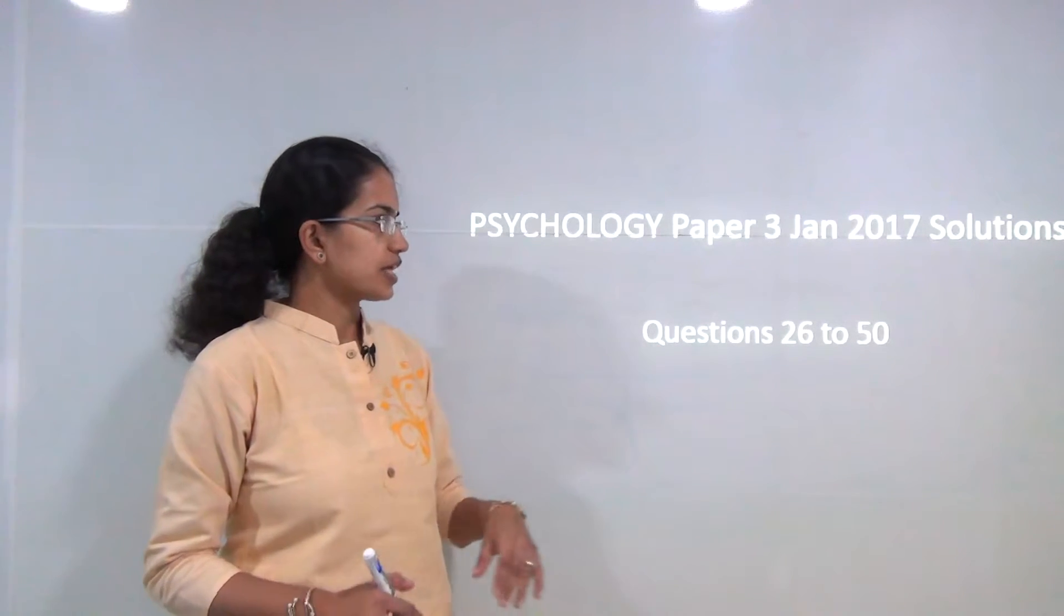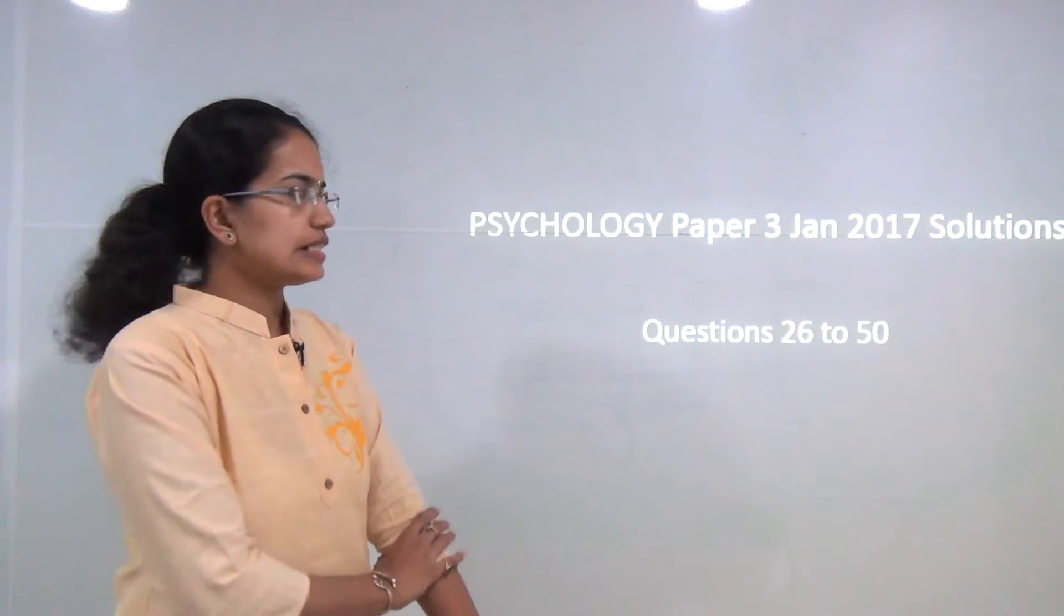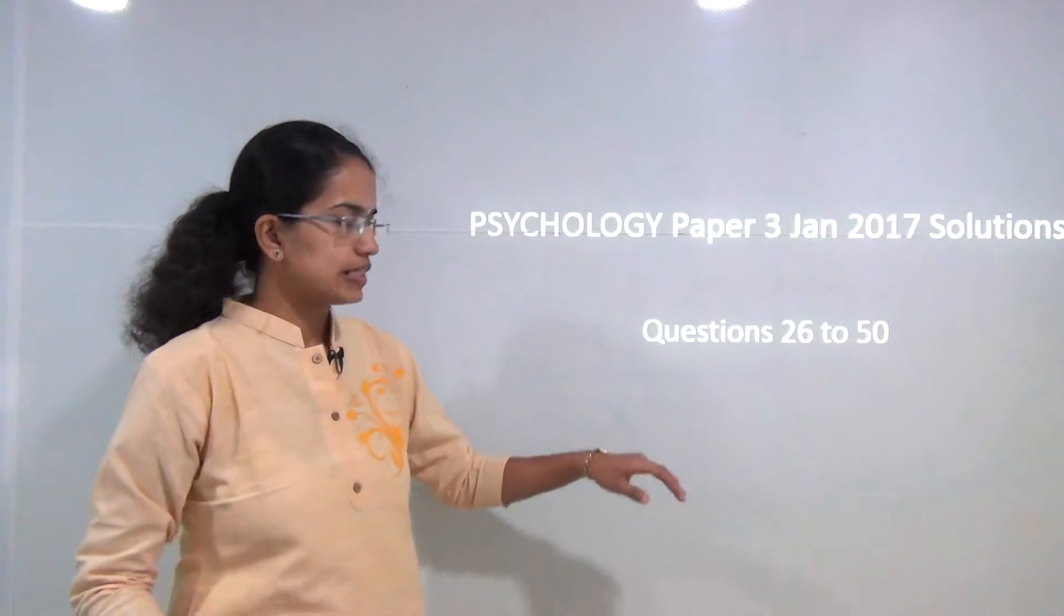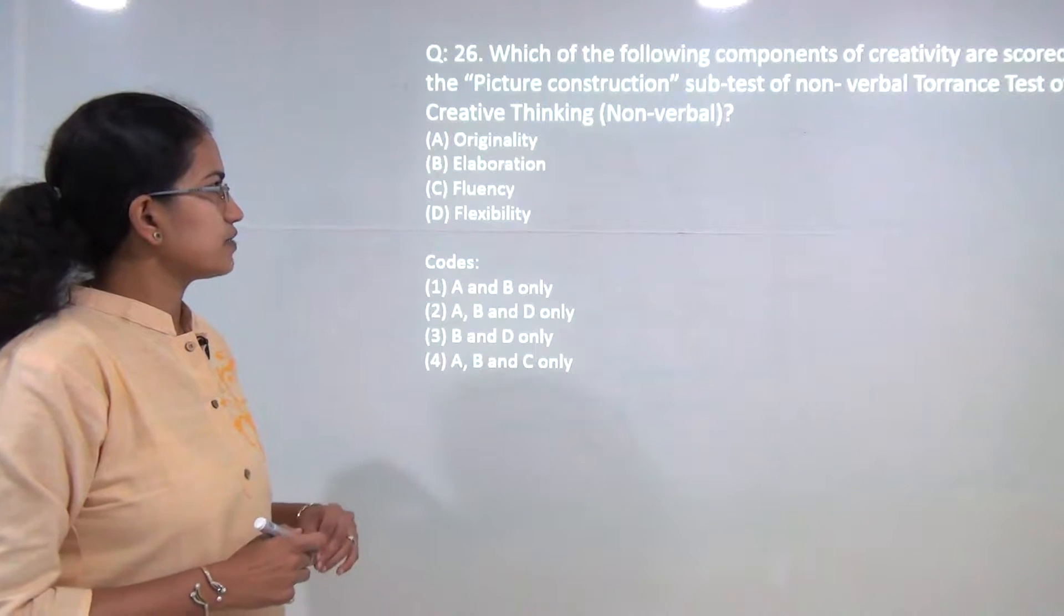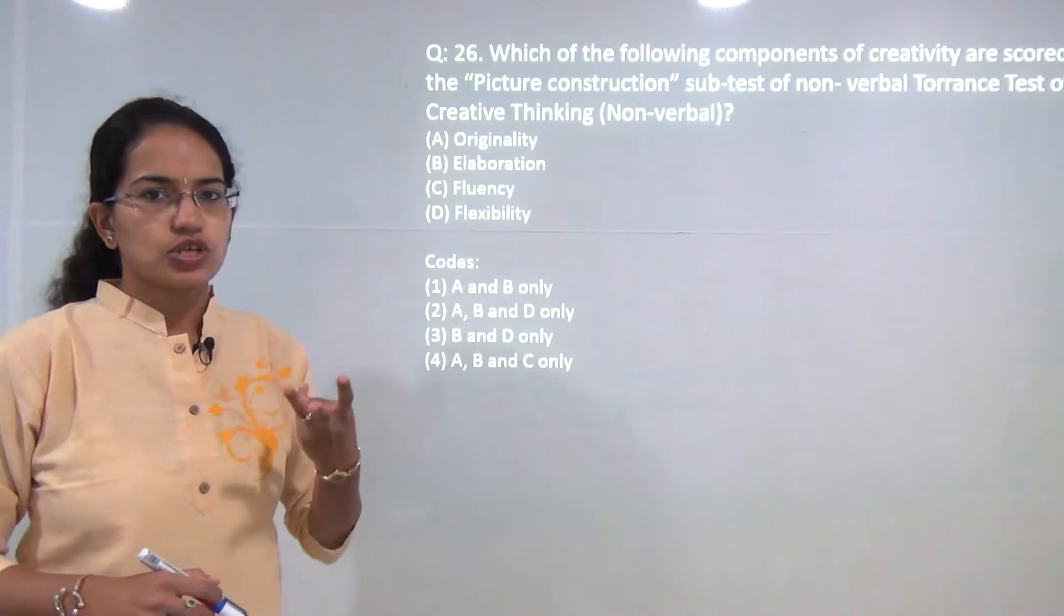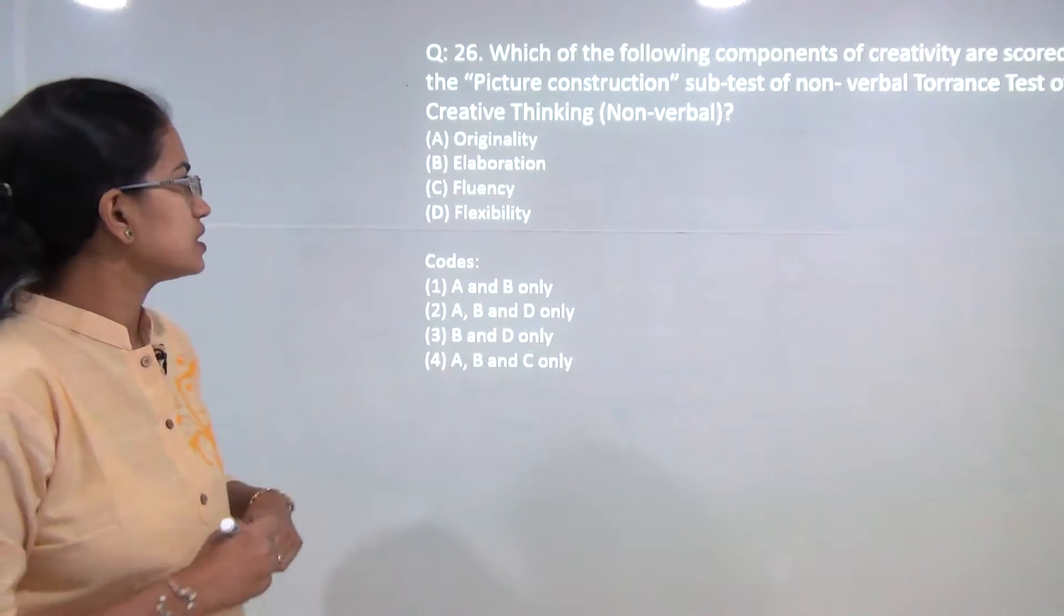Welcome, we will start with the next class for psychology paper 3, January 2017 solutions, questions 26 to 50. The first question talks about the Torrance test for creative thinking and it focused on five basic aspects.